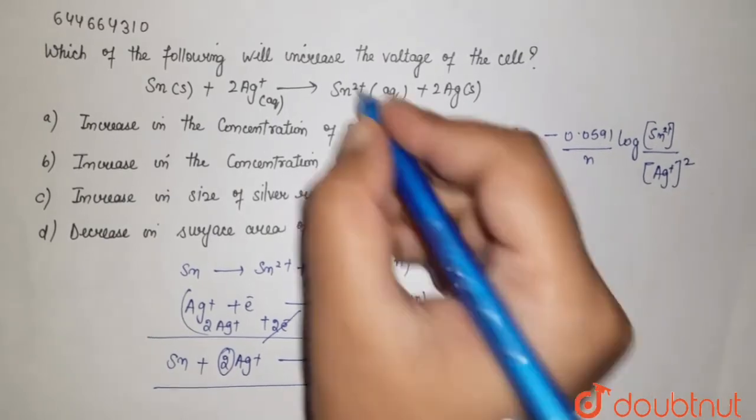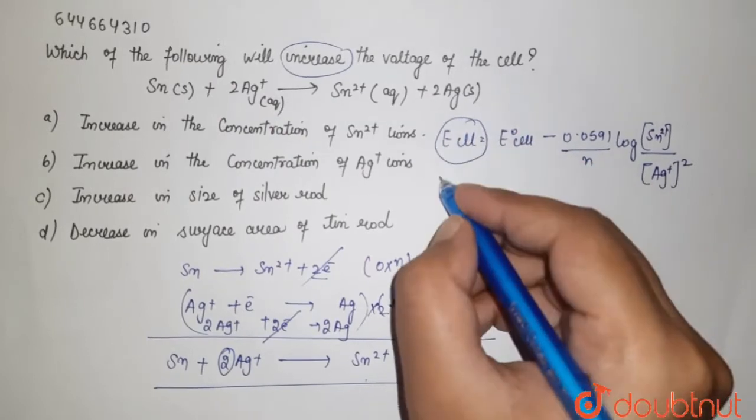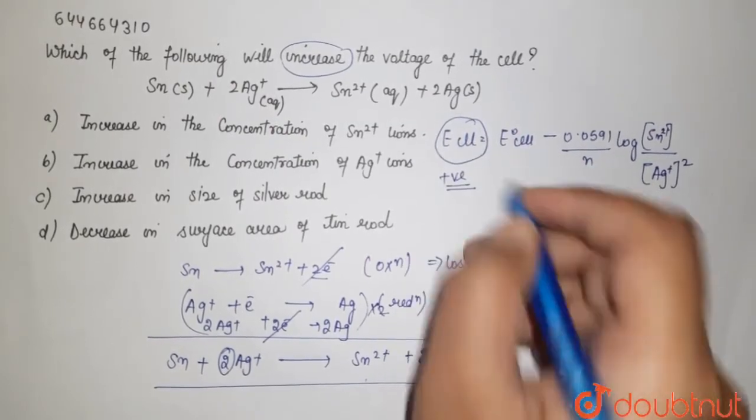So what we are saying is that increase in the voltage means we need this value as a positive one. It means this value must be an increased value.